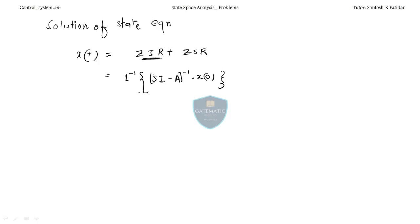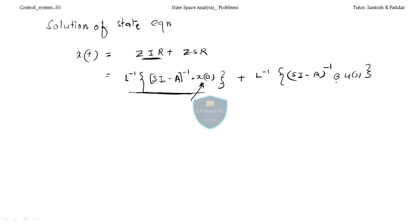In ZSR, L⁻¹ of (sI - A)⁻¹ · B · U(s) — input parameter, an input. This is your ZSR, zero state response. Here the state is zero; here the input is zero for ZIR. So this was the formula.